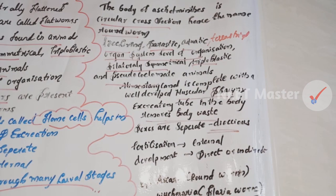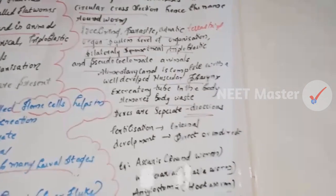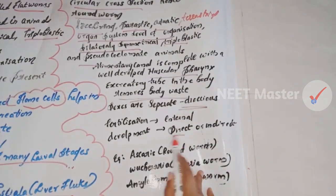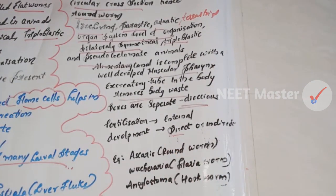Males and females are distinct. Females are longer than males in Aschelminthes. Fertilization is internal. Development can be direct or indirect. In the direct form, young ones are morphologically similar to adults.